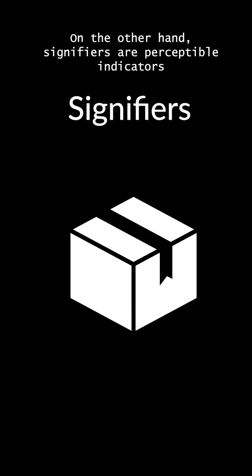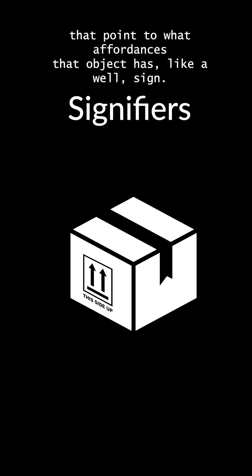On the other hand, signifiers are perceptible indicators that point to what affordances that object has — like, well, a sign.